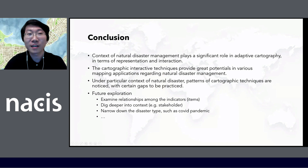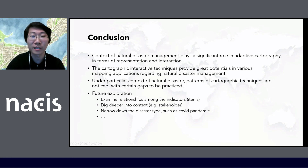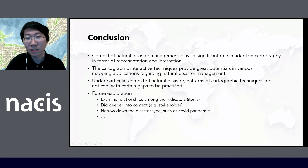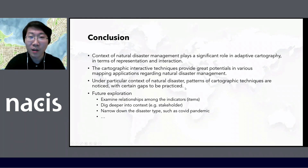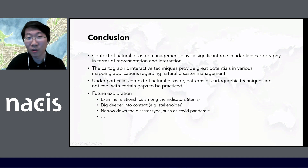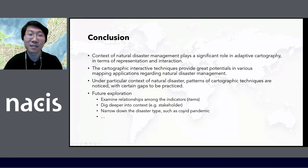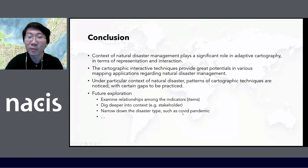Concluding: the context of natural disaster management really plays a significant role in adaptive cartography in terms of both cartographic representation and interaction. Interactive techniques provide great potential in natural disaster management applications. Under specific contexts, the patterns are really different, and we notice their characteristics as well as some gaps to be addressed in the future. Further exploration includes examining relationships among indicators rather than just comparing them overall, digging deeper into the content — for example, stakeholders, which I didn't cover sufficiently — and also narrowing down the disaster type. For example, we could explore this year's COVID pandemic as a disaster.